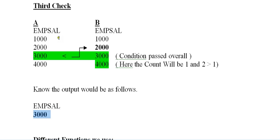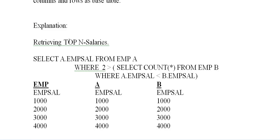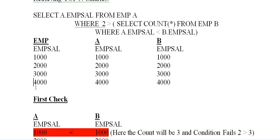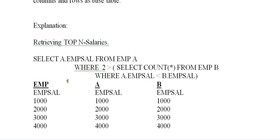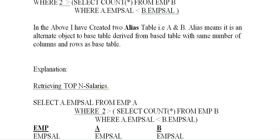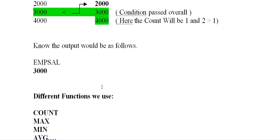This is how the internal check works for correlated subqueries. The same approach works for finding the Nth max salary — whether it's the 50th or 60th max among millions of records. You can also use different aggregate functions like COUNT, MAX, MIN, or AVG based on your requirements.